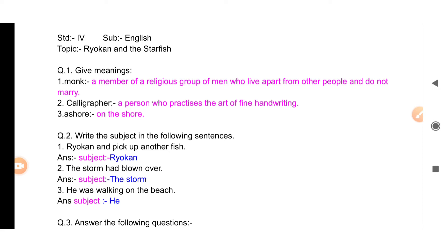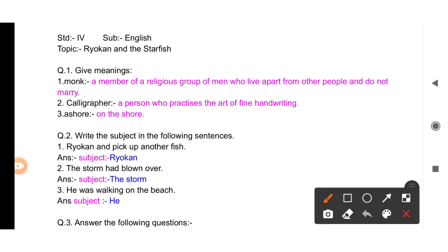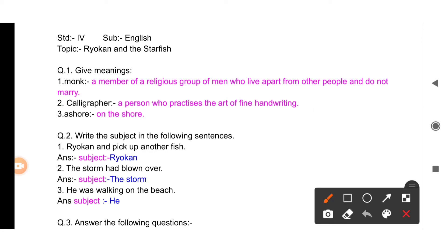That is a monk. The next meaning is 'calligrapher.' You have heard of calligraphy — it is a writing style. A person who practices the art of fine handwriting is called a calligrapher. Calligraphy is an art of writing — jo bahut stylish letters banate hain, alphabets banate hain bahut style mein, alag-alag tarike ke — unko kya bolte hain, calligrapher. 'Ashore' matlab kinaare pe — washed ashore matlab kinaare pe chala gaya, seaside mein, samudra ke kinaare.